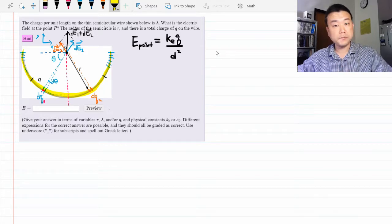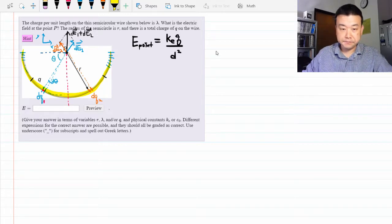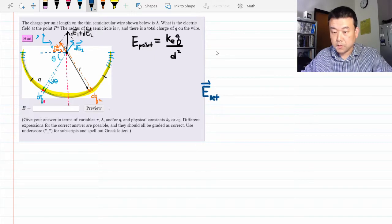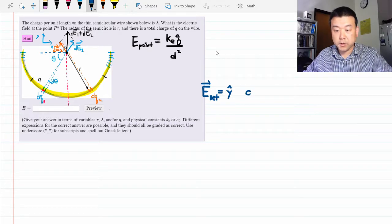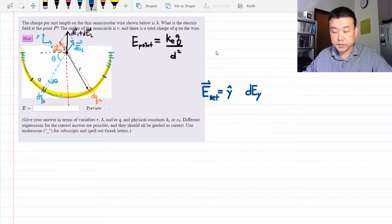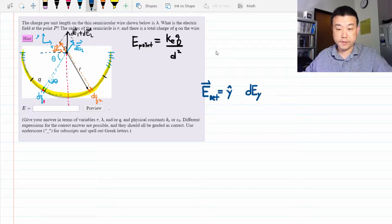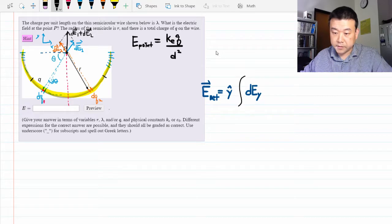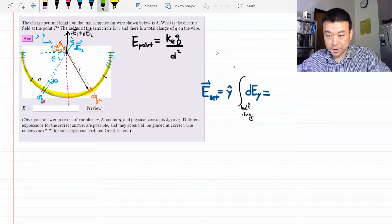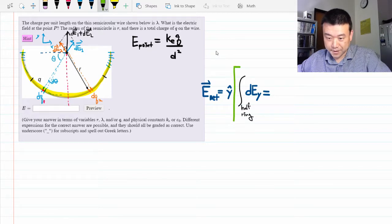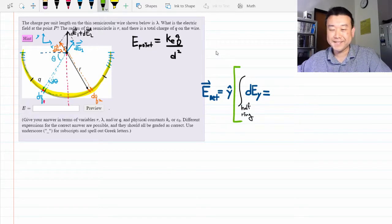So let's go through calculation. The net electric field will be in the Y direction. And for the magnitude, we will have to integrate all the contributions to the Y component of the electric field over the entire half ring. So let's write this out. From this point on, I am just going to write this portion so that I don't have to keep writing down Y hat.